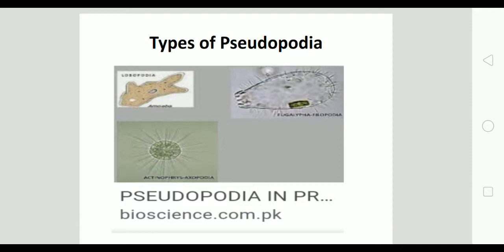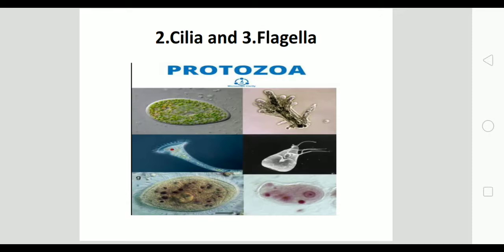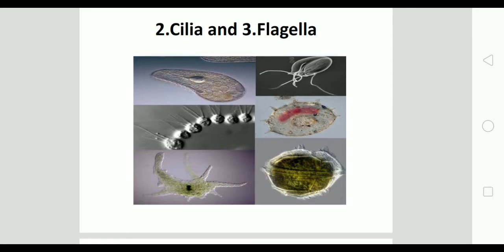In the next diagram you can observe protozoan animals which have cilia and flagella. The next types of locomotory organelles are cilia and flagella. Both cilia and flagella are locomotory organs and both are movable, but there is a basic difference between them. Different types of protozoans having cilia and flagella can be observed in the diagram.